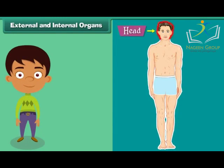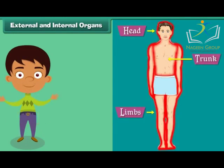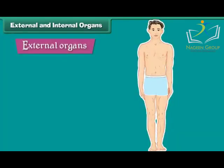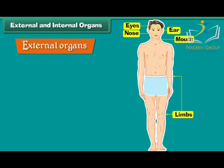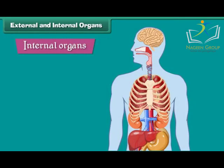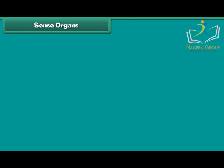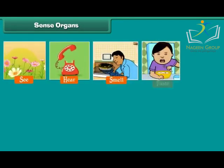Each of the three main parts of the human body bears many organs. These organs may be classified as external organs and internal organs. The organs that can be seen from outside are called external organs — for example, eyes, ears, nose, mouth, and limbs. The organs that cannot be seen from outside are called internal organs — for example, brain, heart, lungs, stomach, liver, kidneys, and bones.